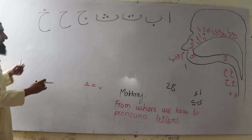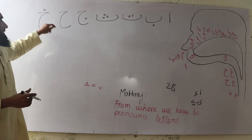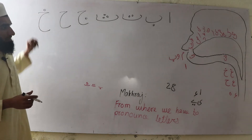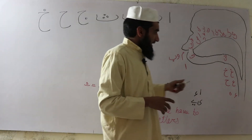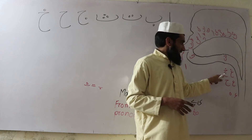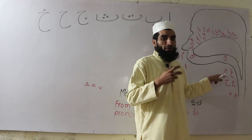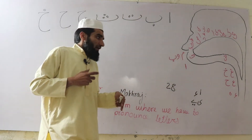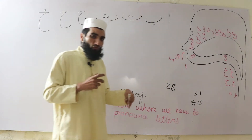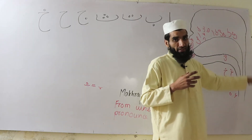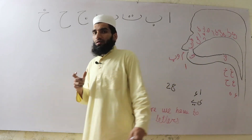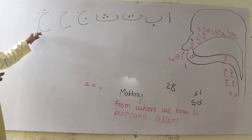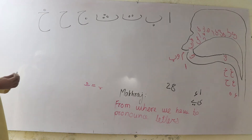Kha has one dot upside, while Ha is empty from any dot. Kha is also a throat letter — from the upper throat. The root of the tongue touches the upper side: Kha. It has a special sound.